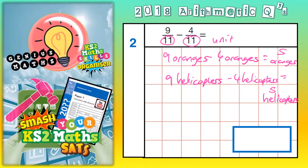9 apples take away 4 apples, 5 apples. 9 fire engines take away 4 engines, 5 fire engines.